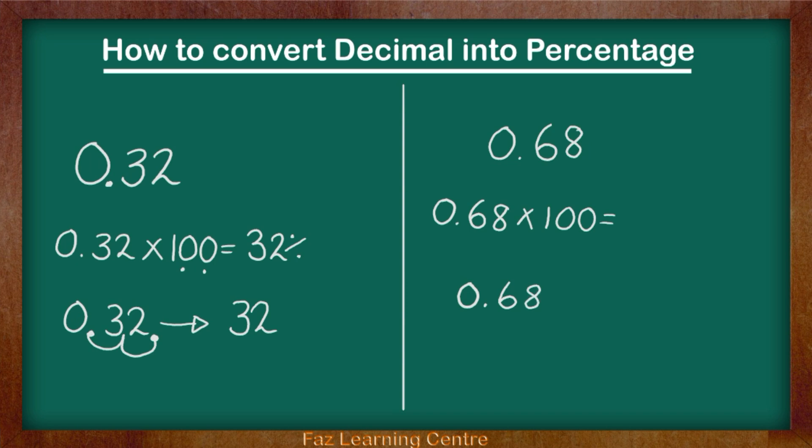Now I am going to look at how many zeros do I have in the number 100. I have two zeros. So I will be moving my decimal point two times towards my right. One, two.